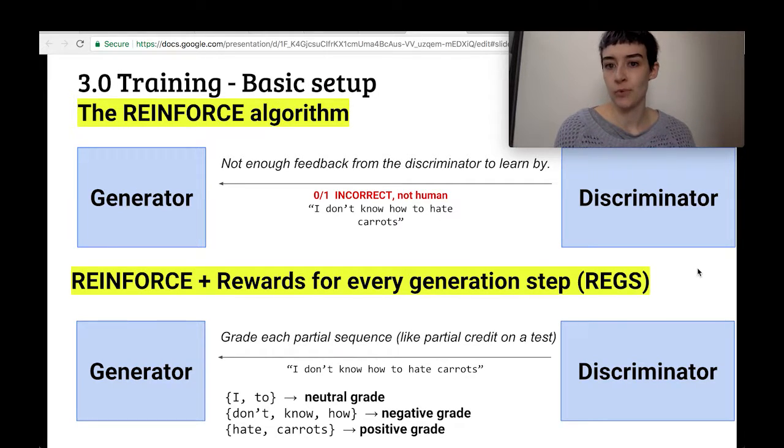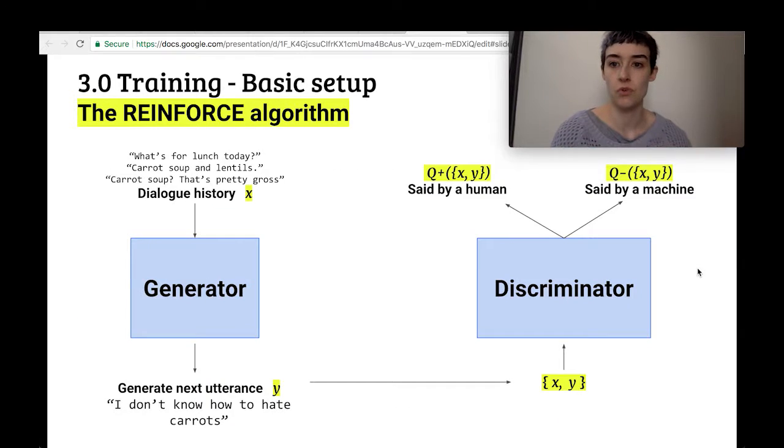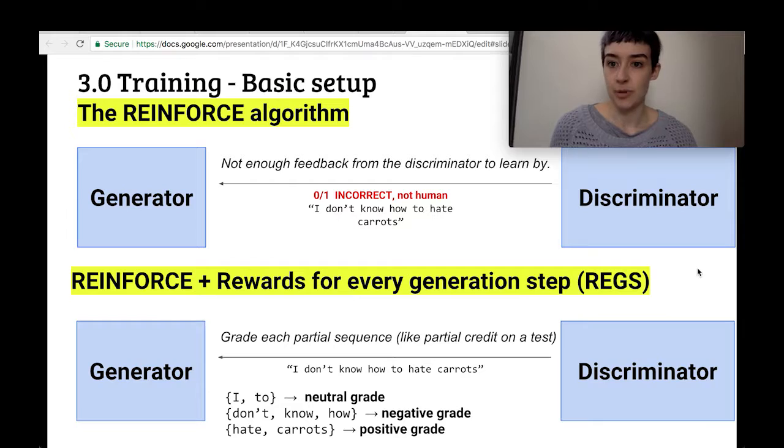So for example, I and to in the utterance, those are very neutral common words that get a neutral score. 'Don't know how,' that's a negative grade because it's a very robotic thing to say. If you've ever asked Siri or Google Home to do something it doesn't know how to do, it will say 'I don't know how to do that.' So not a human thing to say. 'Hate carrots,' that's very relevant to the conversation, which before was about lunch, carrots, lentils. So that's going to get a positive grade. And the generator will be able to learn more efficiently from that.